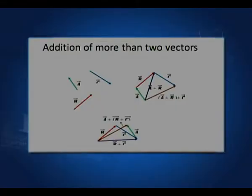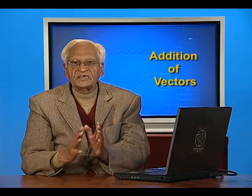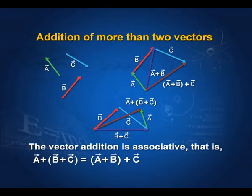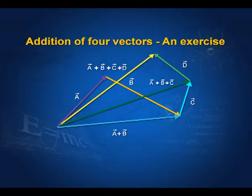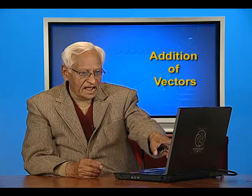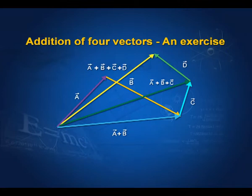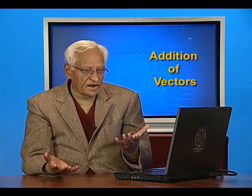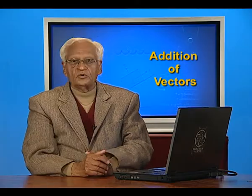You can carry on this process by changing the order — I added B plus C first, but you can add A plus B first and see that it makes no difference. The end result is the same: the two result vectors are equal, parallel, and have the same magnitude. Therefore, vector addition is associative: A plus (B plus C) equals (A plus B) plus C. You can extend this to four vectors A, B, C, D, adding them in sequence, and the end result is always the same regardless of order.